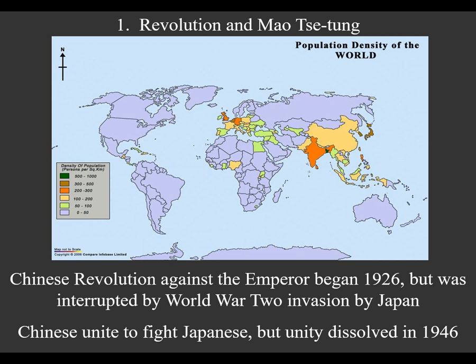Japan's invasion happened in the early 1930s, several years before World War II started in Europe with the German invasions. When they got invaded from outside, the Chinese factions unified to try to kick out that foreign invader and bring China back under Chinese control. That took quite a while because World War II went through 1945. Once the United States largely defeated Japan by the end of 1945, the Chinese factions started fighting each other again — that unity dissolved in 1946, and again it broke out into a multifaction civil war.